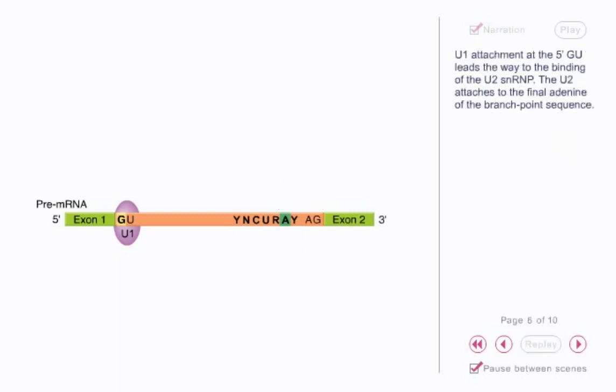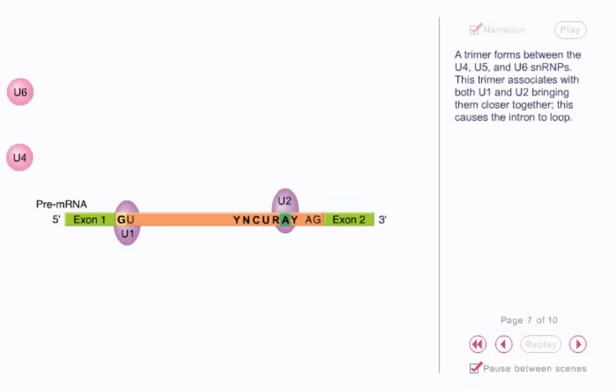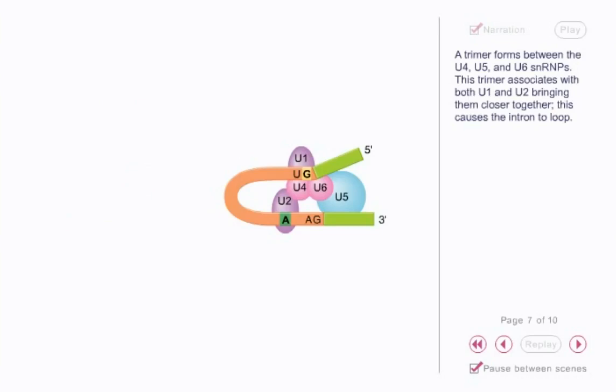U1 attachment at the 5' GU leads the way to the binding of the U2 SNRP. The U2 attaches to the final adenine of the branch point sequence. A trimer forms between the U4, U5, and U6 SNRPs. This trimer associates with both U1 and U2, bringing them closer together. This causes the intron to loop.